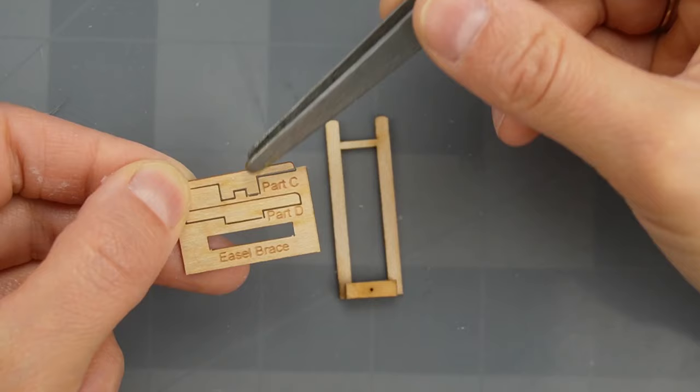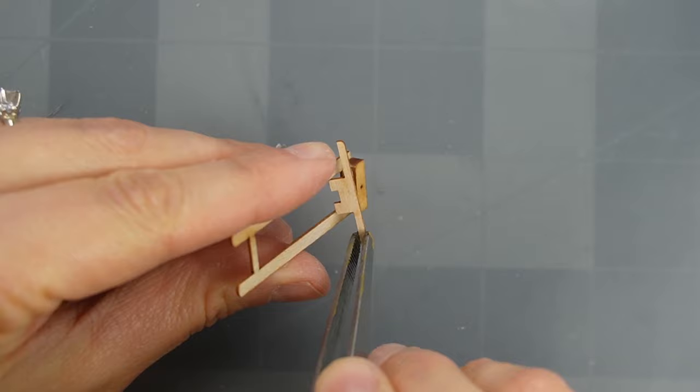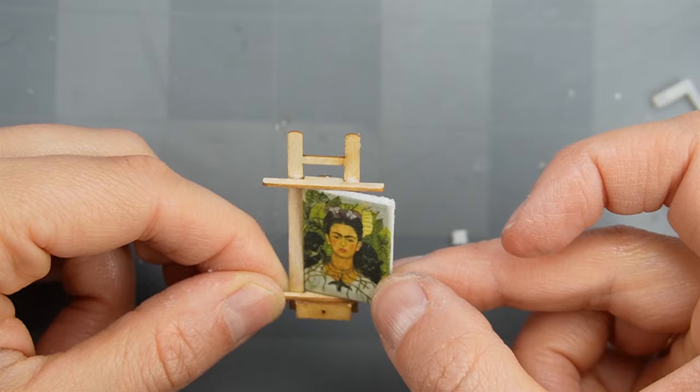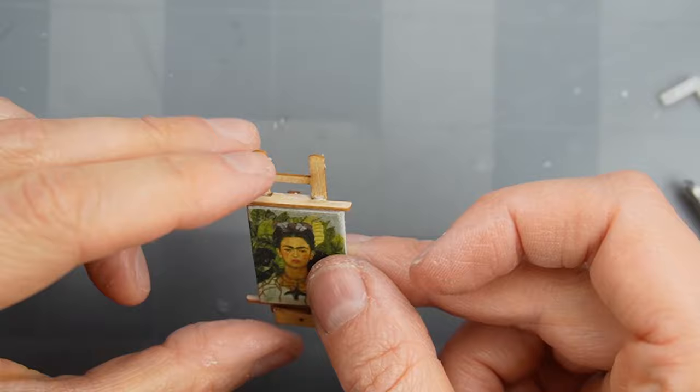With the main structure complete, I assembled the easel back so I'd have somewhere to rest my art. I used the height of the piece of art I chose as a guide for where to glue part D of the kit.